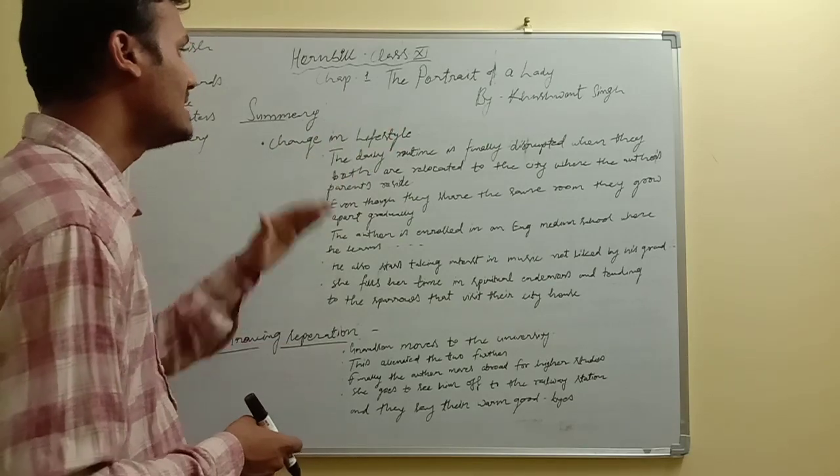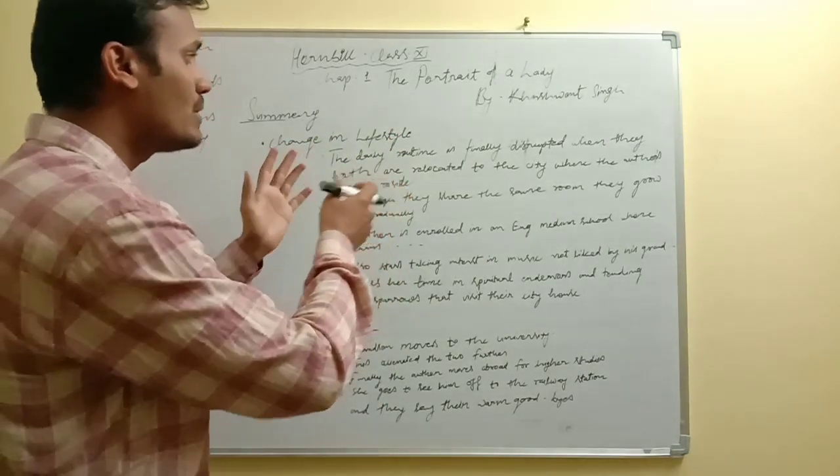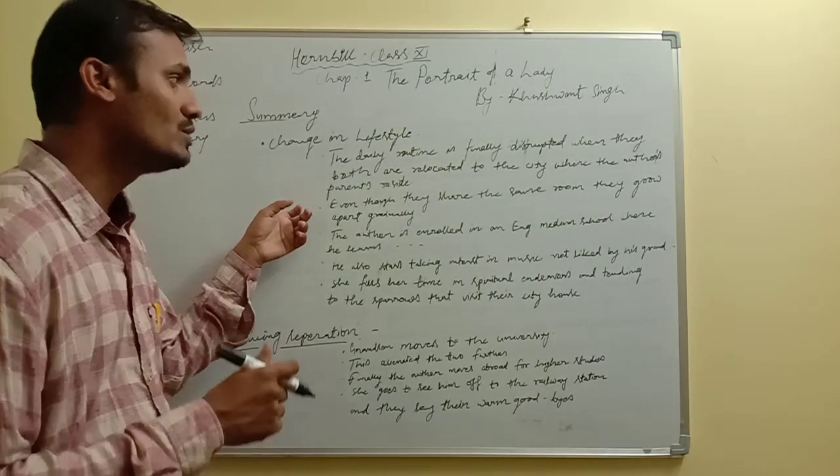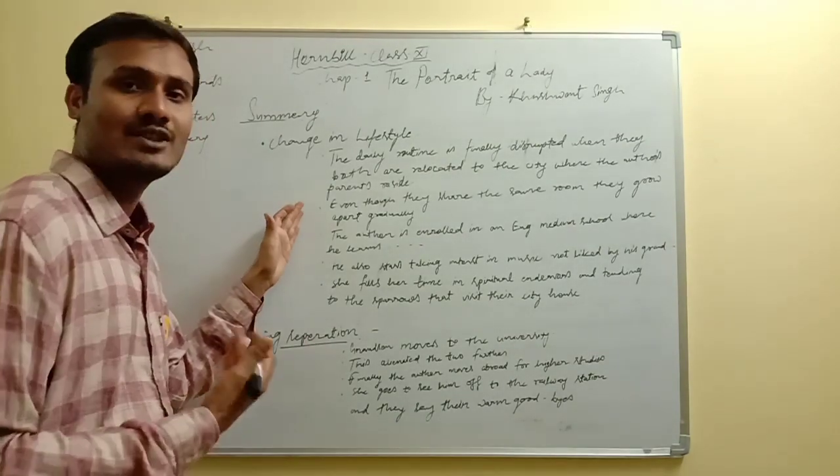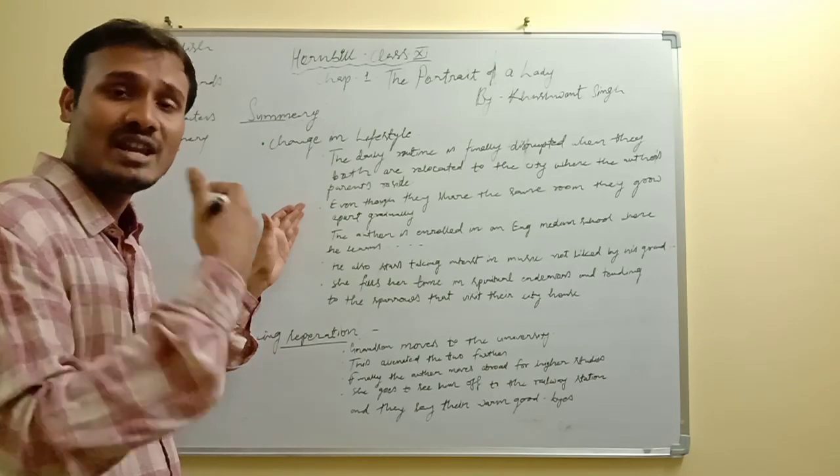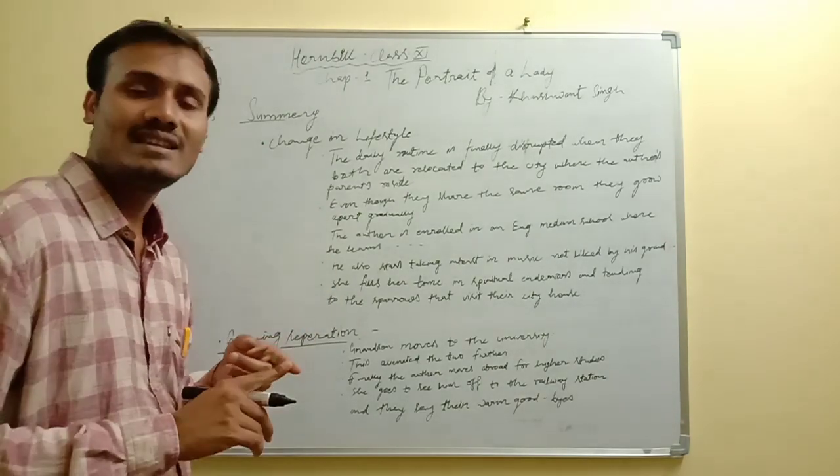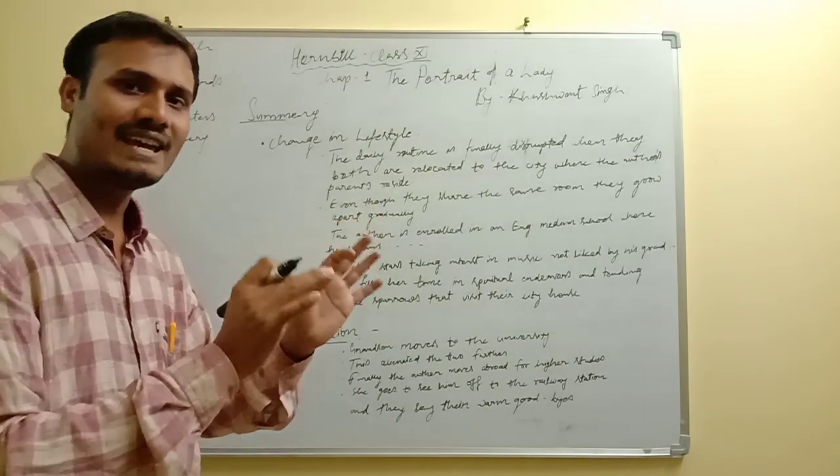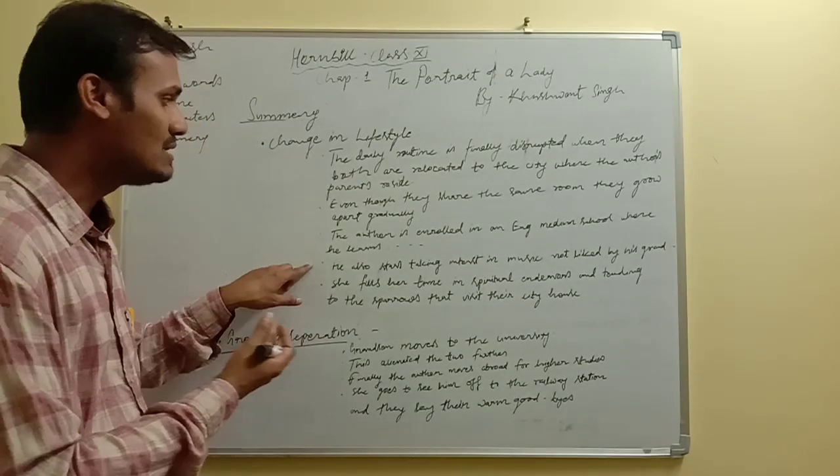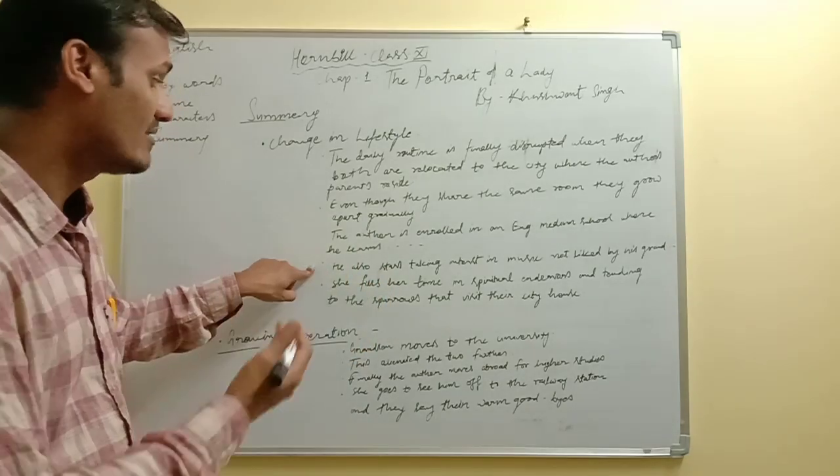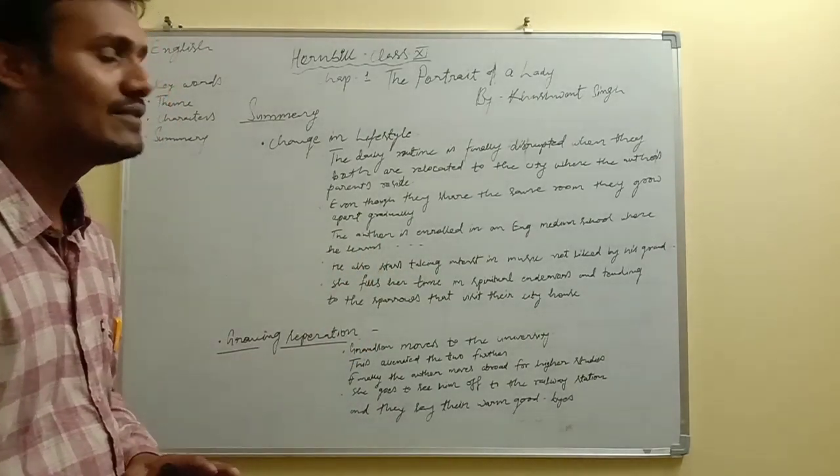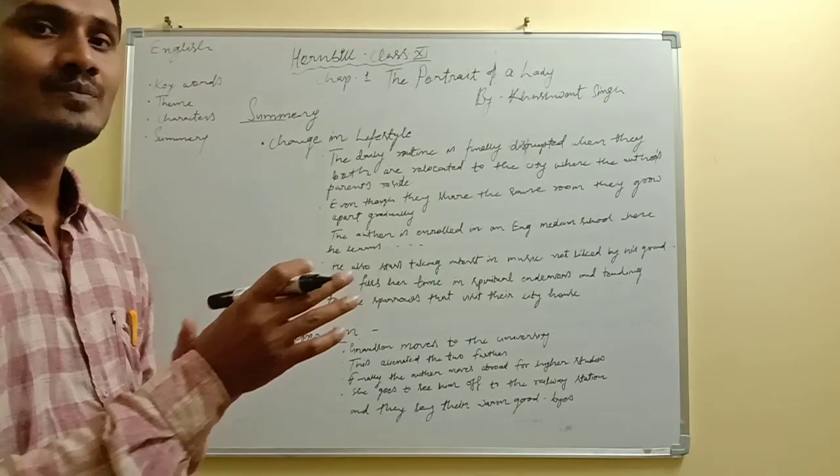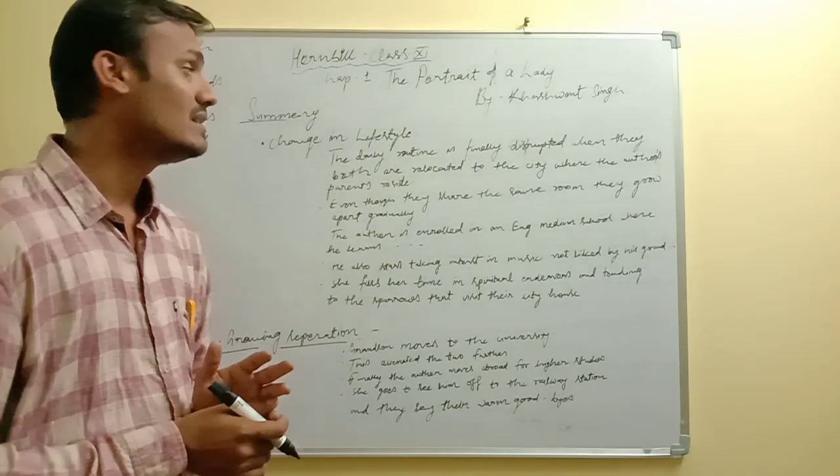The second phase is change in lifestyle. When they have relocated to the city house, their daily routine is completely disrupted. Though they are sharing the same room, they grow apart gradually as the author is studying and has been enrolled in an English middle school. He studies maths and science in place of spiritual things, which is not liked by his grandmother. He also starts taking interest in music, which is also not liked by her. She fills her time in spiritual endeavors and tending to the sparrows that visit their city house.